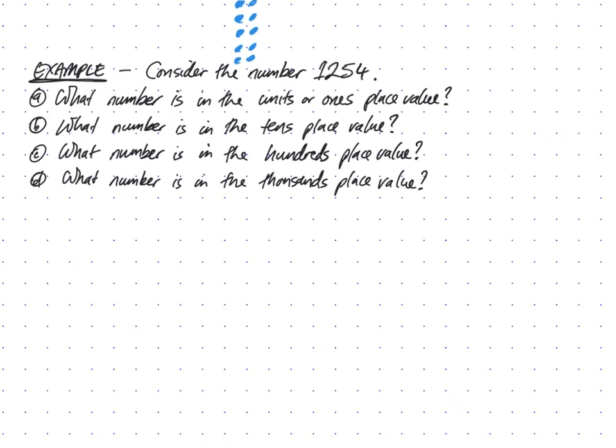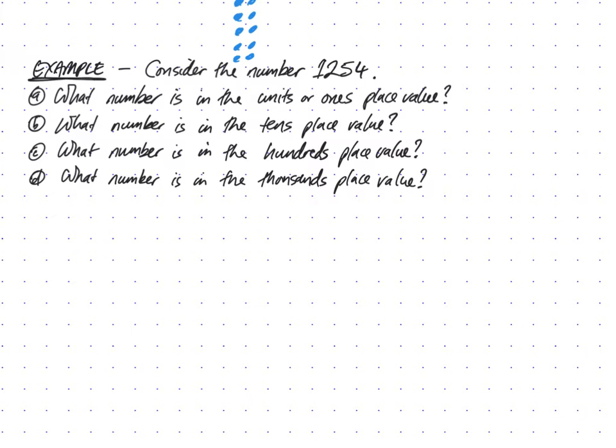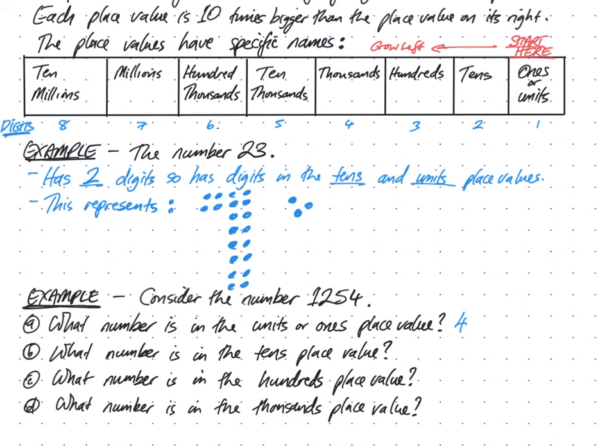Lastly, consider the number 1254. What number is in the units or ones place value? The rightmost number is 4. The other place values grow to the left of the rightmost number, so the number in the ones place must be 4. What number is in the tens place value? You can look at this table here. I've got one digit, two digits - so the second digit is in the tens column. The number in the tens place is 5.